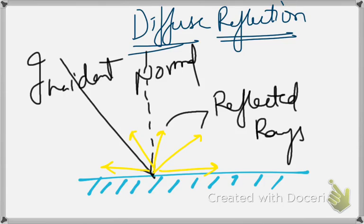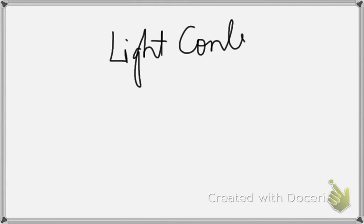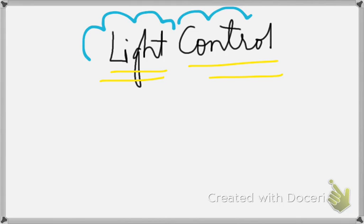It is important to know the types of reflections because they help us in something called light control. Light control is a burning topic now because in most of the restaurants and most of the movie theaters, the lighting is given a lot of importance.